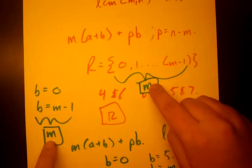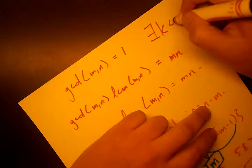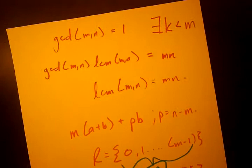M remainders. So that means that only when the GCD is 1, these two numbers are equal. If the GCD is not equal to 1, then that means there exists some K, some K that is less than M, where the remainder is 0 again and the cycle restarts.